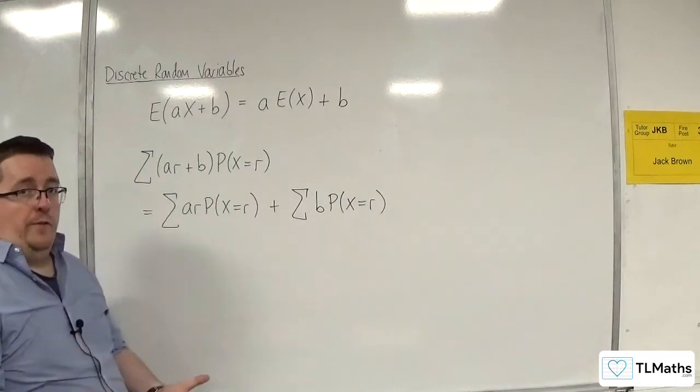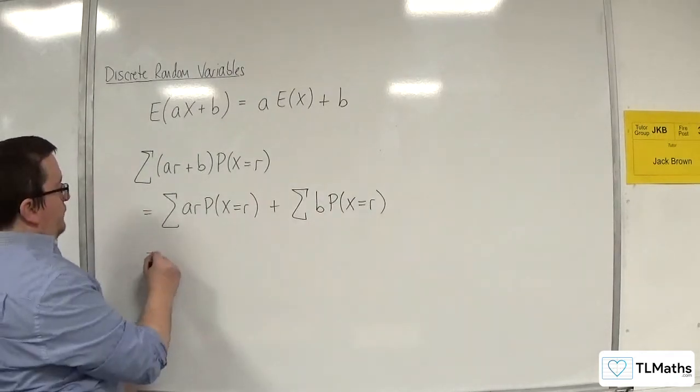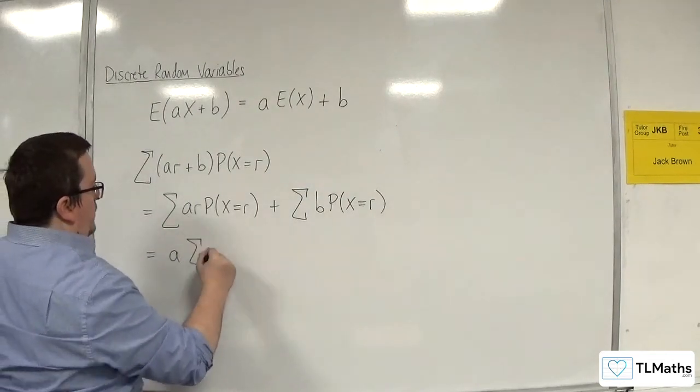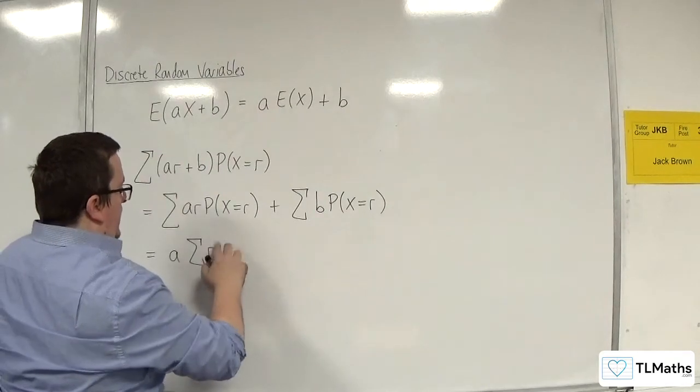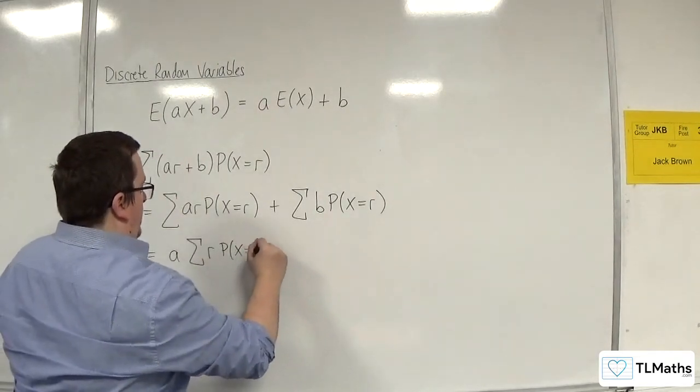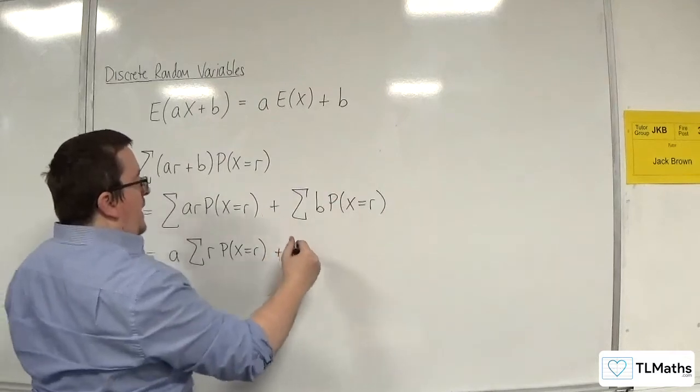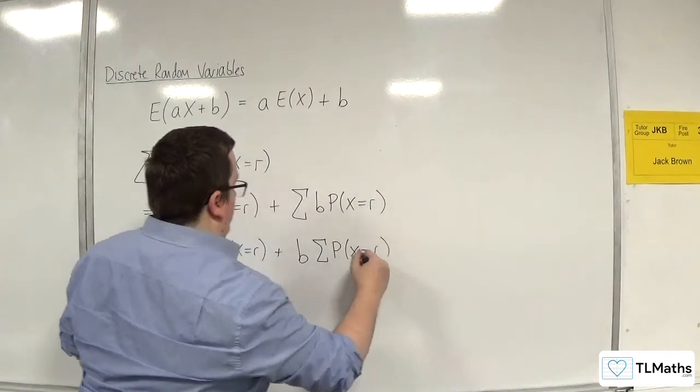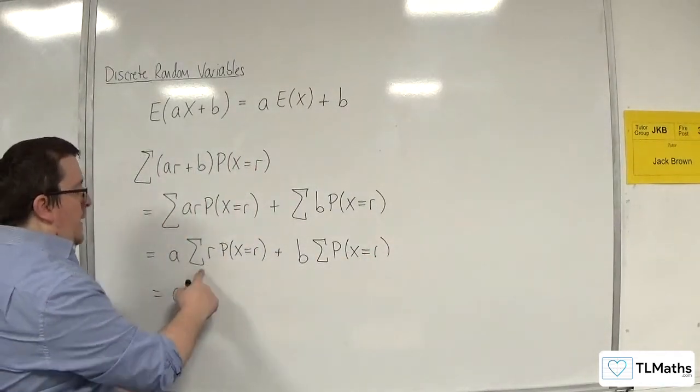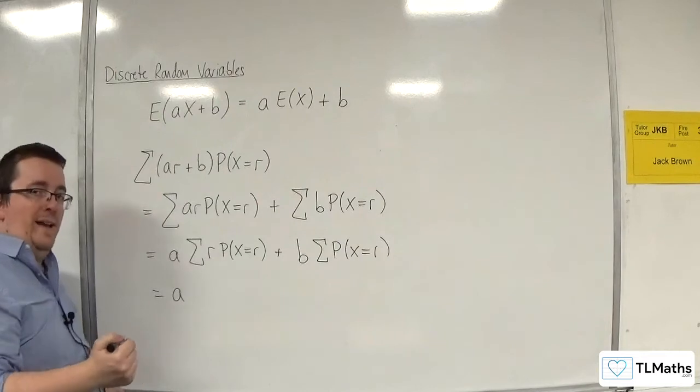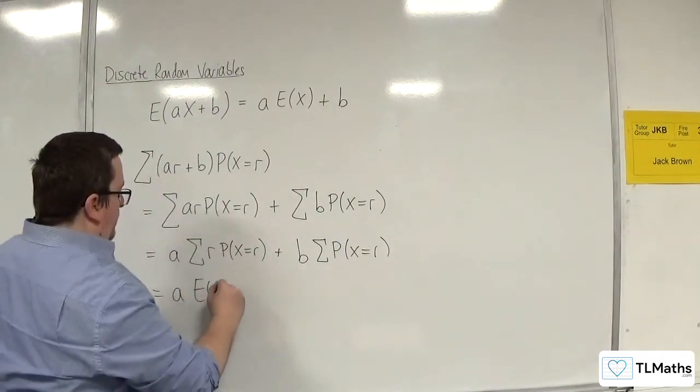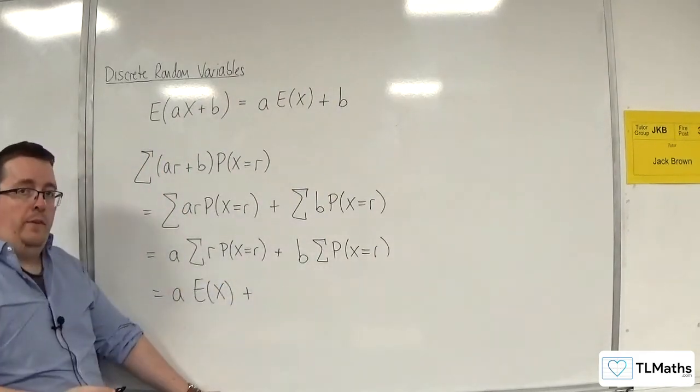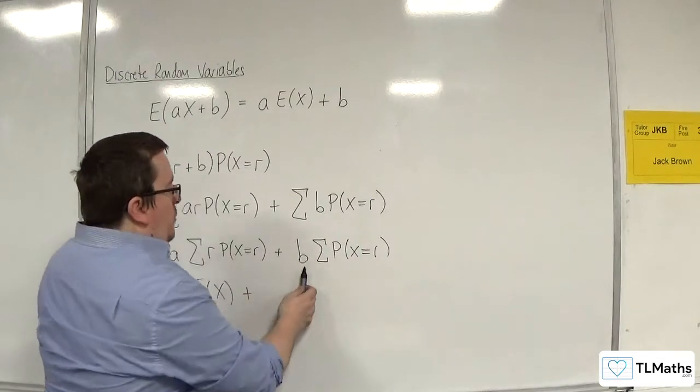And from your knowledge of the sigma notation, we can factor the a outside of this, and here we can factor the b out. And of course here, the sum of r times P(x = r) is E(x). And this is the sum of all the probabilities, which we know is just 1. So here we've got b times 1.